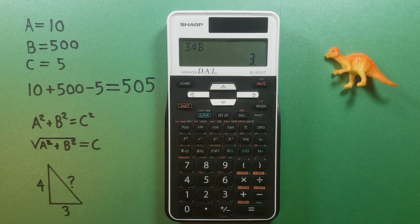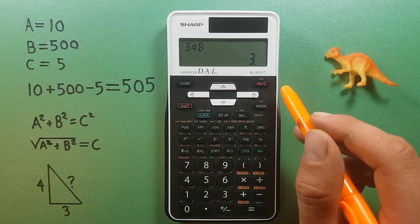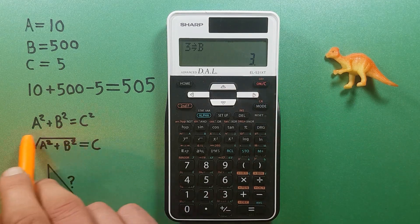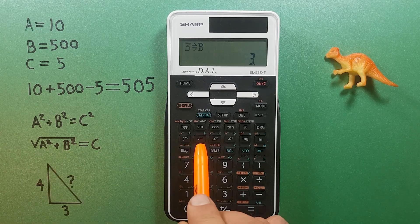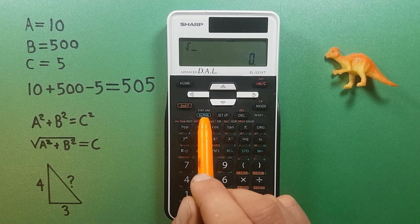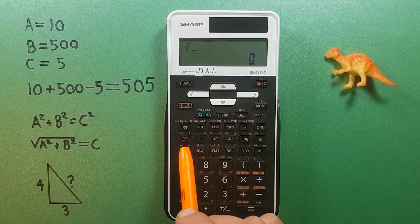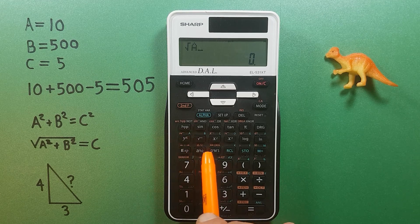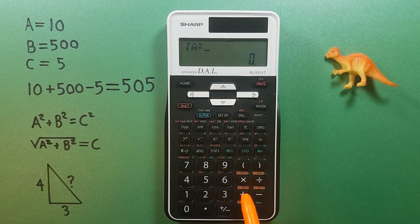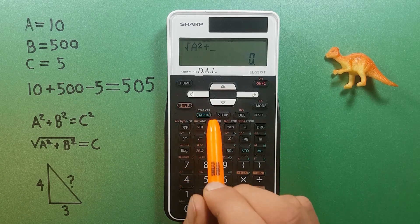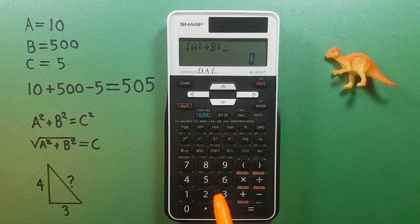So we have our two known distances. Now we want to do our calculation, which is the square root of A squared plus B squared. Start with the square root, and then we can use alpha to bring back the storage slots as letters. So alpha A squared plus alpha B squared.